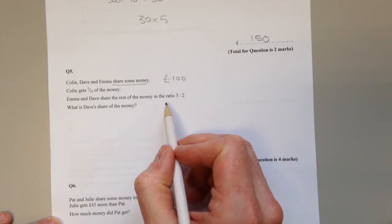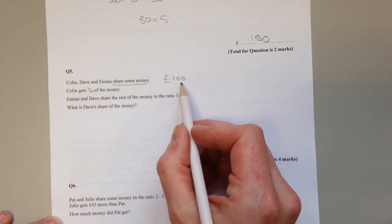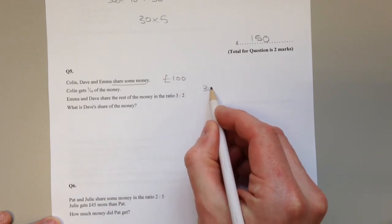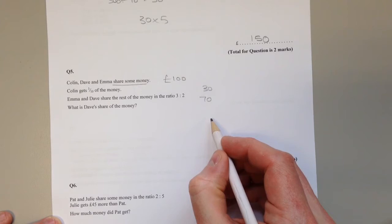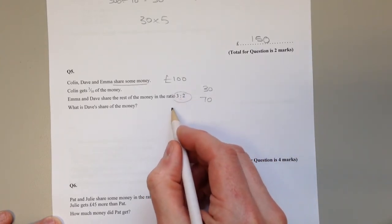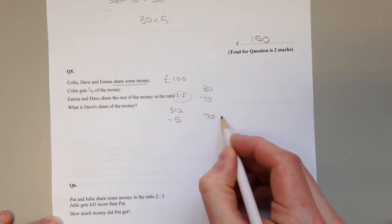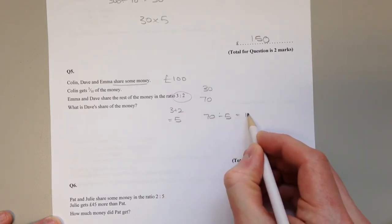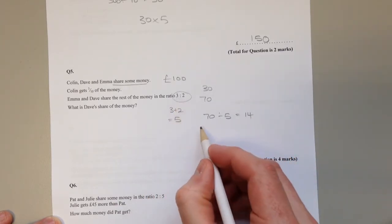100 should be a fairly easy number to work with. Colin gets 3 tenths of the money. 3 tenths of 100 pounds is 30 pounds. That means Emma and Dave have 70 pounds to share between them. They share that in the ratio 3 to 2. So exactly the same rules as above. We know how they would share out 5 pounds. How many lots of 5 pounds are there in 70?